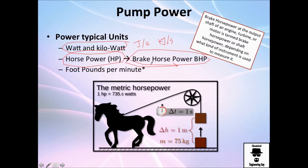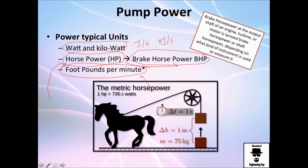You also have horsepower, which is a traditional unit but very commonly used in pumping. Brake horsepower is similar. There's also the English unit of foot-pounds per minute, but that's not widely used. I'd recommend working in the international system and then converting to horsepower, which is approximately 735.5 watts.